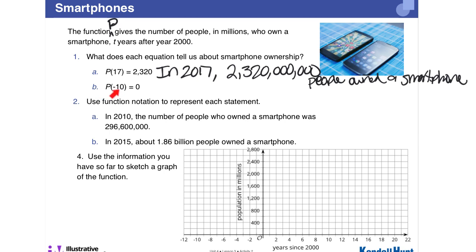In B, p of negative 10, so that means 10 years before the year 2000, zero people owned a smartphone.